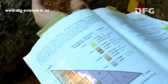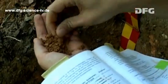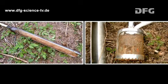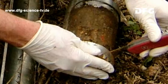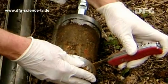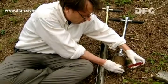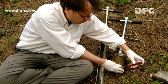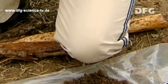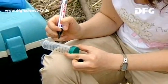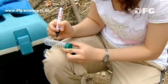Soil contains over 20 tons of microorganisms per hectare. This is known as the microbial soil biomass and contains millions of species of fungi and bacteria. They aren't all that easy to isolate, so the scientists study them in the soil itself.